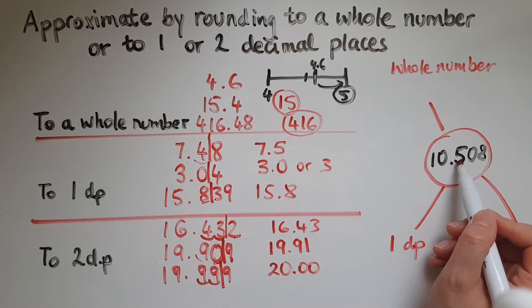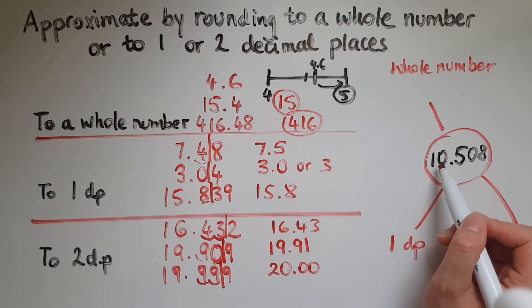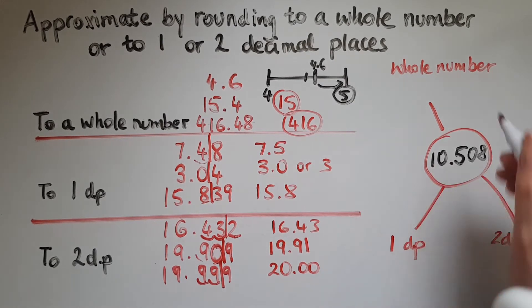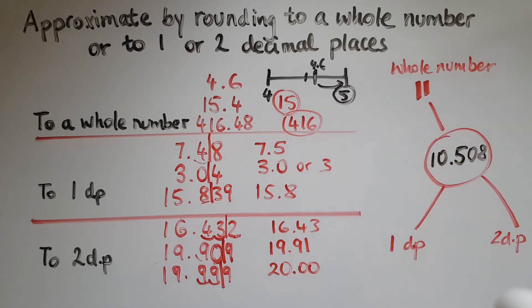So this is a 5, meaning that I need to round up. So this is actually more than 50 pence if it was money. So I would round this to 11, to the nearest whole number.